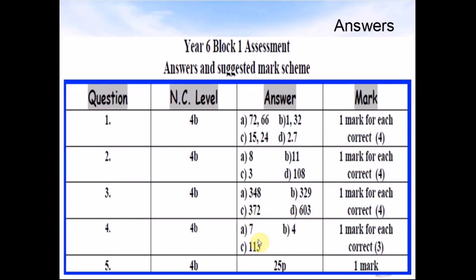Question 4: A was 7. B was 4. C was 113. Question 5 was 25p.